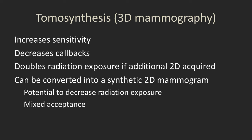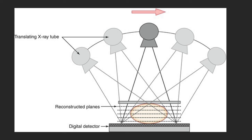Tomosynthesis can be converted into a synthetic 2D mammogram, which has the potential to decrease radiation exposure. There is mixed acceptance of these in the breast imaging community — some feel resolution is lost for identification of certain findings. For 3D mammography, the patient's breast is in compression the same as for 2D imaging, but instead of the tube staying perpendicular, it swings over and takes a series of images — between 7 and 15 depending on the manufacturer — and that data is reconstructed into slices through the breast.